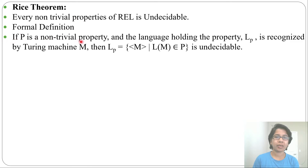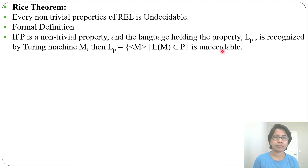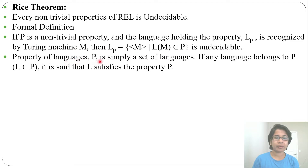The formal definition of Rice's theorem is: if P is a non-trivial property and the language holding the property, L_P, is recognized by some Turing machine M, then L_P = {M | L(M) belongs to P} is undecidable.